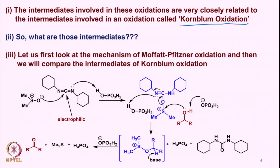As mentioned, the dicyclohexylcarbodiimide (DCC) has two nitrogens, and one of the nitrogens gets protonated by phosphoric acid, forming an intermediate. If we write cyclohexane as Cy, it would look something like this, and this gets protonated, placing a positive charge on the nitrogen. This makes the carbon much more electrophilic than the original DCC. So first DMSO attacks — the DMSO oxygen attacks onto this carbon.